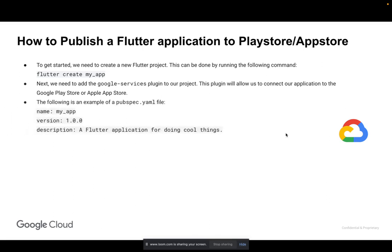The following is an example of a pubspec.yaml file. We can see that we have name, version, description, and dependencies mentioned here.